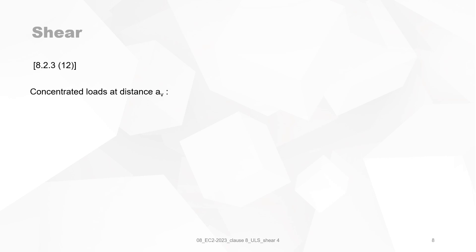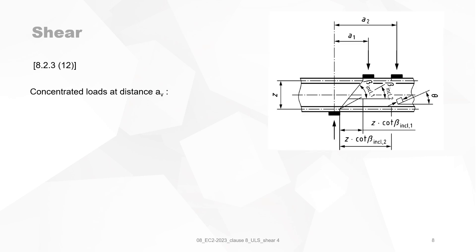Concerning concentrated loads at a distance AV. We see that the distance AV is equal to Z cotangent beta inclined and beta inclined is defined as it is mentioned on this drawing. It is a function of the distance A1 that a concentrated load is acting near the support. Of course, AV must be smaller than Z cotangent beta. Otherwise, you will not be able to use those favorable formulas for concentrated loads at a small distance to the support.